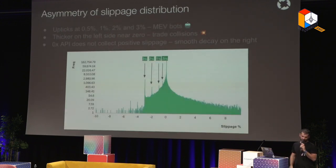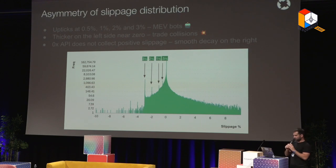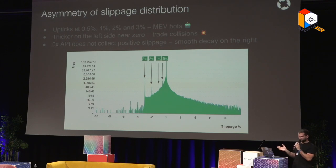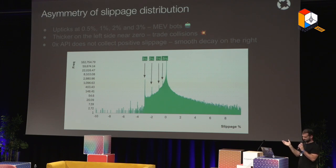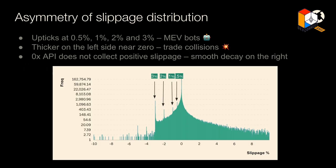Here is the realized slippage distribution. It's slightly tilted toward the negative side, with a cap at around three percent since most applications don't have over three percent slippage tolerance by default. Importantly, there are notable upticks at exactly 0.5, 1, 2, and 3 percent — the default slippage tolerance values. These upticks happen because MEV bots are targeting trades to push them to the worst acceptable price.